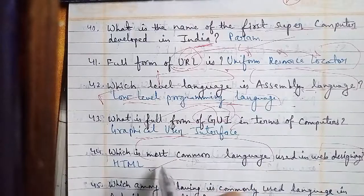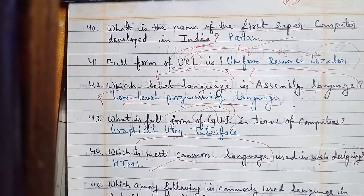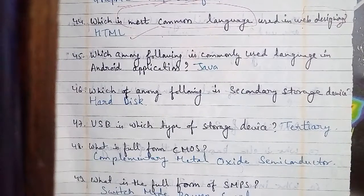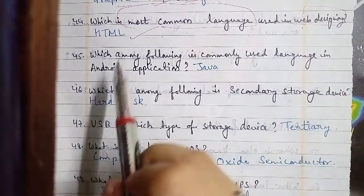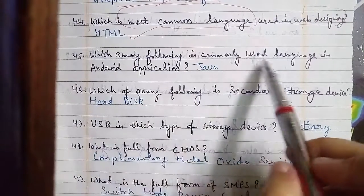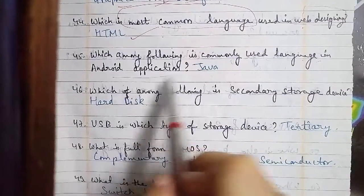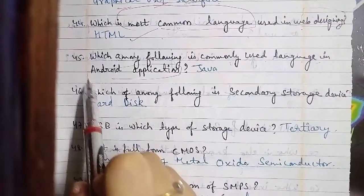Question number 45: which among the following is a commonly used language in Android application development? The answer is Java.